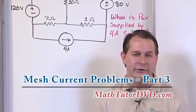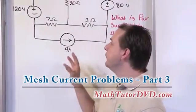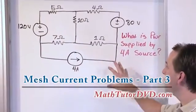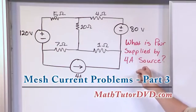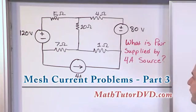Hello, welcome to the circuit analysis tutor. In this section we're going to use this circuit here on the board and we're going to solve it with mesh current methods. The question is, what is the power supplied by the 4 amp source?